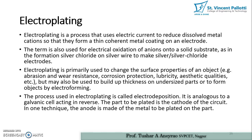Anodizing and electroplating methods are the same. The term is also used for electrical oxidation of anions onto a solid substrate, as in the formation of silver chloride on silver wire to make silver/silver chloride electrodes. Electroplating is primarily used to change the surface properties of an object.